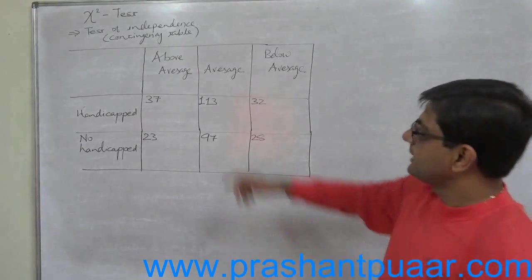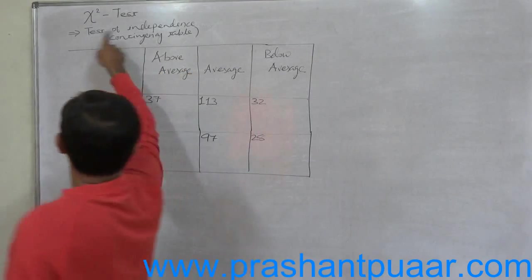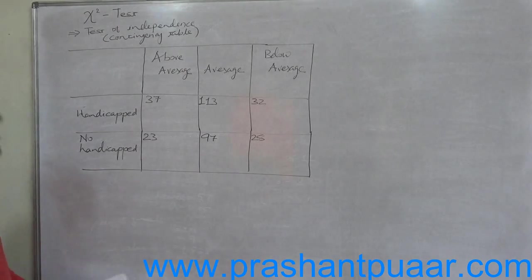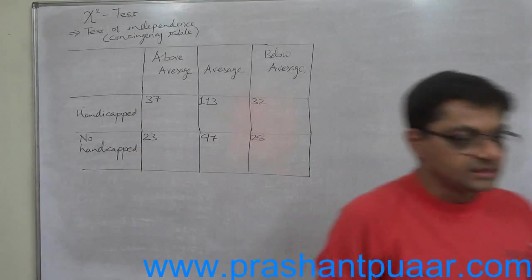There is the chi-square test, and in chi-square test the first part is test of independence, which is popularly known as the problems with contingency table.